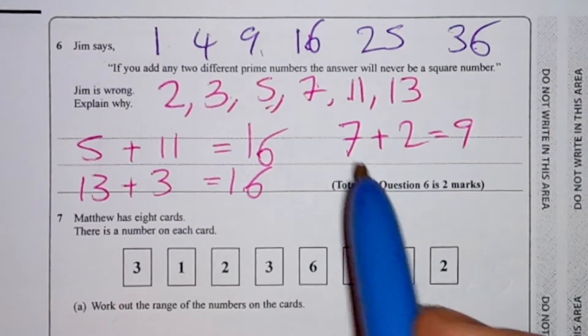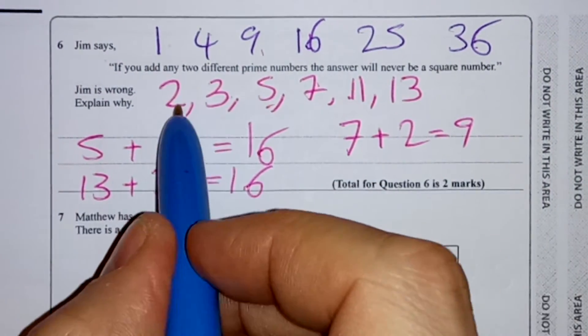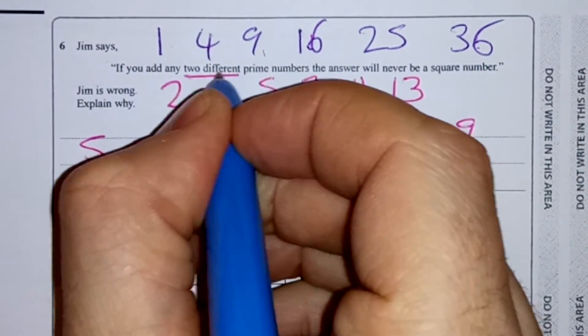of these are fine. The only thing you can't have is 2 plus 2 equals 4, because it does say two different prime numbers.